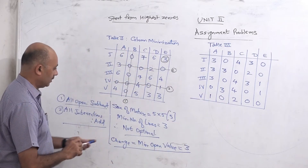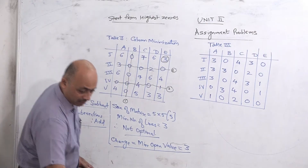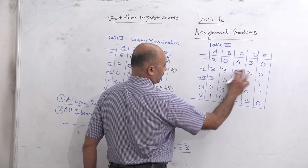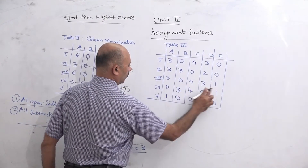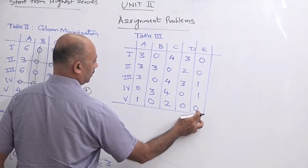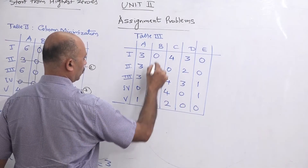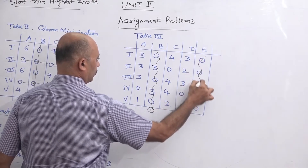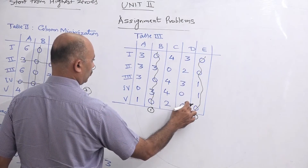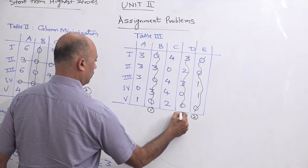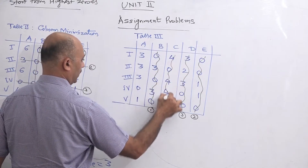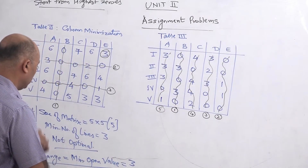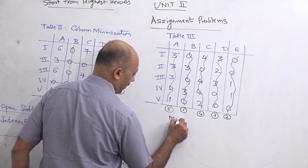Table 3 is now complete. We again check optimality by covering all zeros with minimum lines, starting from the highest number of zeros. Counting zeros per row/column: we find a column/row with 3 zeros — draw line 1. Another with 3 zeros — line 2. Then 2 zeros — line 3. Then 1 zero — line 4, and another 1 zero — line 5. We now have 5 lines, so the solution is optimal because our minimum number of lines equals 5.